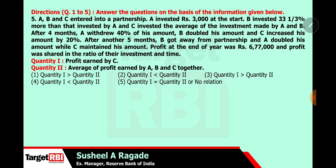This is the last question on inequality. A, B, C entered into a partnership. For simplicity we take A's investment as 30. B invested 33.33% more than A, so B = 30 + 10 = 40. C invested the average of A and B, which is 35. This amount was invested for 4 months, so we multiply all amounts by 4.